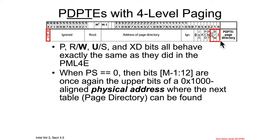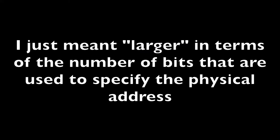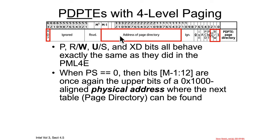All of the present bit, read-write bit, user-supervisor bit, and XD bits are interpreted exactly the same way as we saw in the PML4E. If PS is zero, that means this will be a physical address pointing to the next table in our cavalcade of tables — the page directory — and it will be a larger physical address than the one used for a one gigabyte page frame.